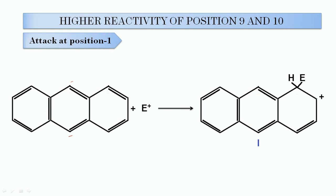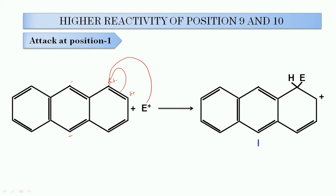When attack occurs at position number 1, this pi bond shifts toward this side, this carbon acquires a partial negative charge, and this carbon acquires a partial positive charge. So the carbocation attacks on this carbon, and structure number 1 — the most stable resonating structure — gets formed. We can see that here we have one naphthalene ring intact with the most stable resonating structure. The resonance energy of naphthalene is 255 kJ/mol.